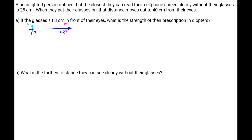We are told that the distance from the person's near point to the eyes is 25 centimeters. And then we're also told that that near point moves further back to 40 centimeters. But the glasses sit 3 centimeters in front of the eye, so then we have to convert those distances with respect to the glasses, not with respect to the eye.